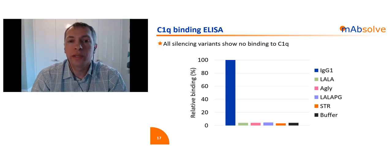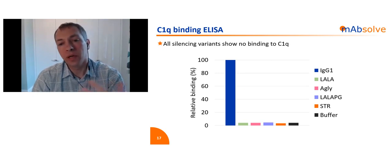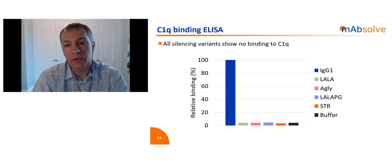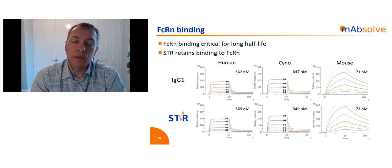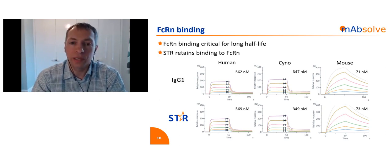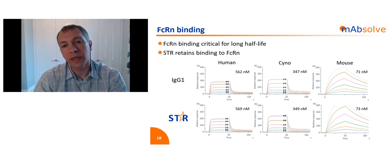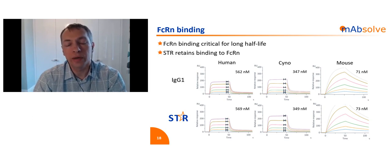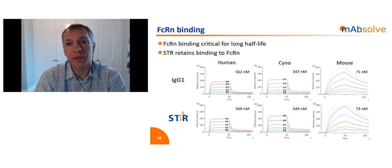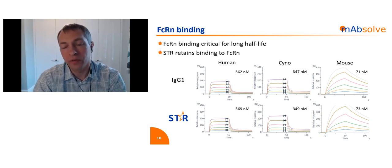Of course, we don't just want to abolish ADCC but also CDC, so we've been looking at C1Q binding. In all honesty, all the variants perform equally well in this regard — none show any meaningful levels of binding to C1Q. The one thing you don't want to impact is binding to FCRN, because you need this to maintain your long half-life. We've compared wild-type IgG1 and STR variants for binding to human, cynomolgus monkey, and mouse FCRN, and there has been no impact on FCRN binding. The STR mutations are in the upper CH2, whereas FCRN binding is at the CH2-CH3 interface.